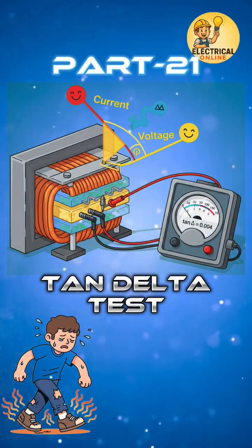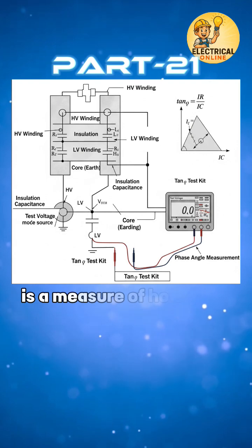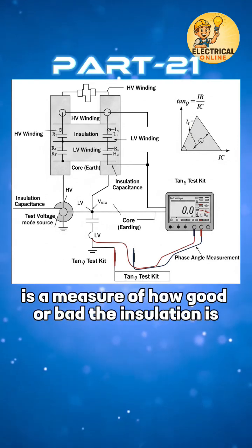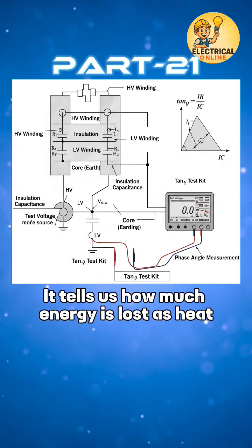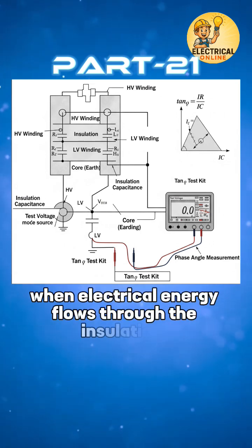In transformer test series 21 is tan delta test. The tan delta is a measure of how good or bad the insulation is inside a transformer. It tells us how much energy is lost as heat when electrical energy flows through the insulation.